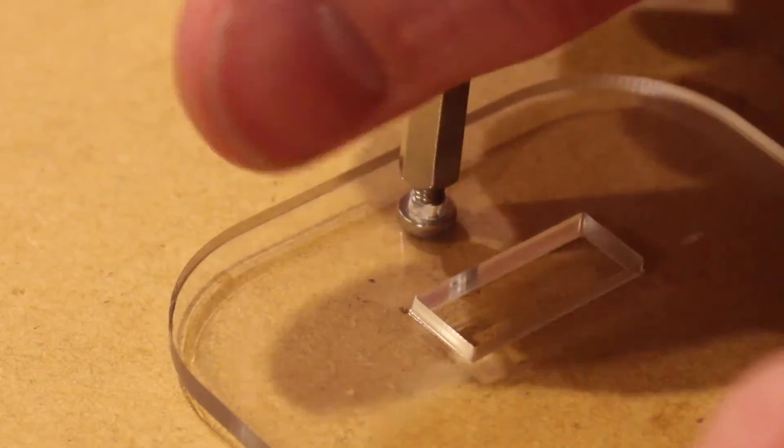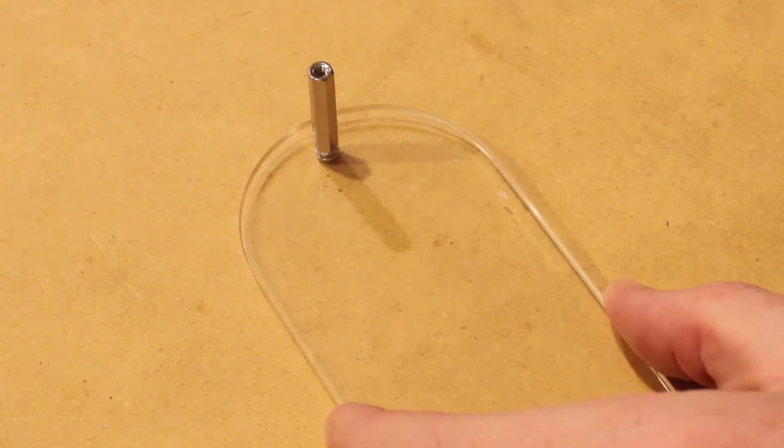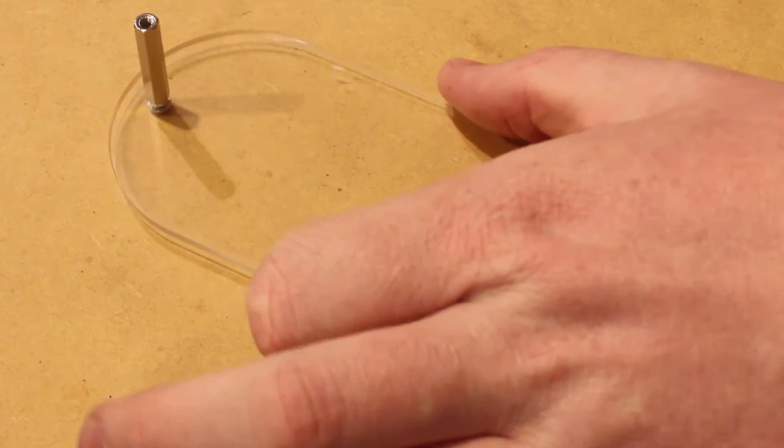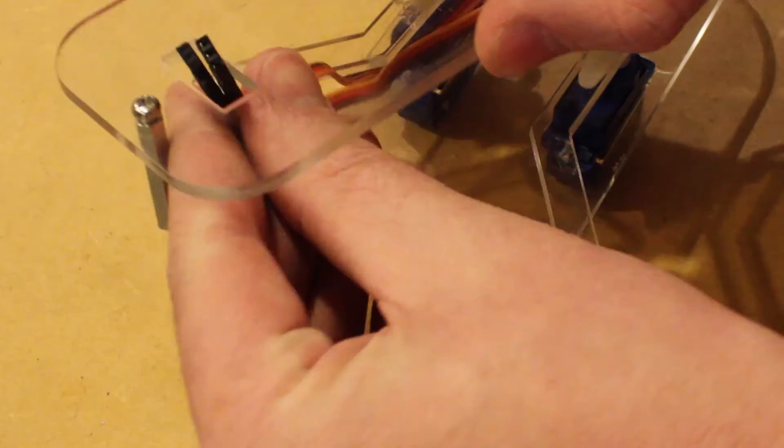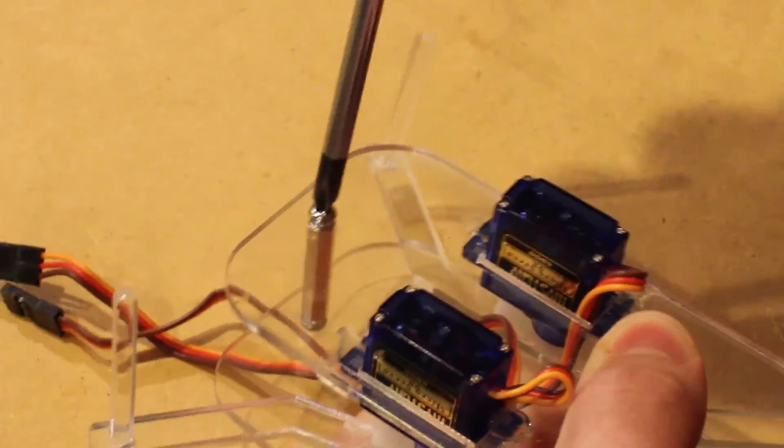We can then fasten in place the two PCB standoffs to the top and bottom mounting plates, feeding the servo wires through the hole like so. Once the two mounting plates are joined together.